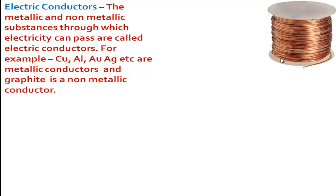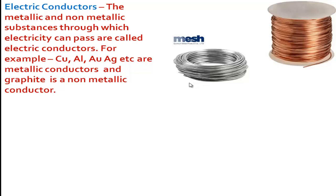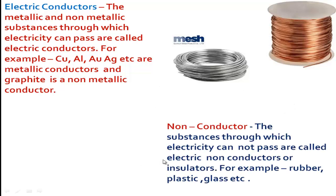This is a copper electric wire, and this is also an electric wire made of aluminium. It is easily understood that metals or metallic wires are generally used to conduct electricity. Now, what would be the non-conductor? The substances through which electricity cannot pass are called electric non-conductors or insulators.